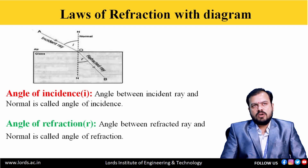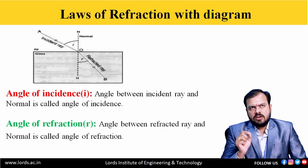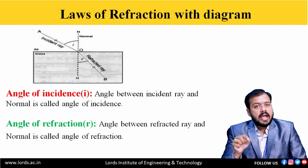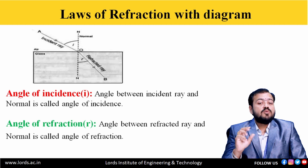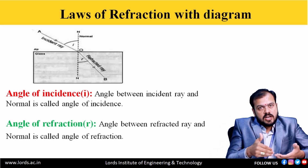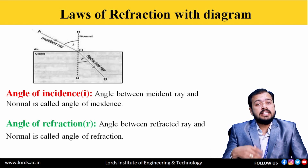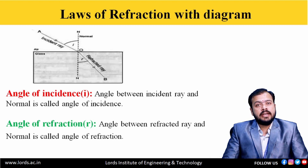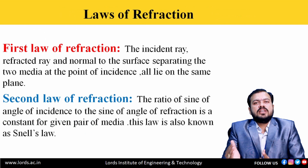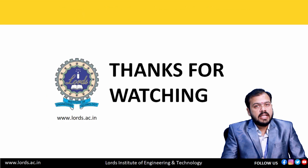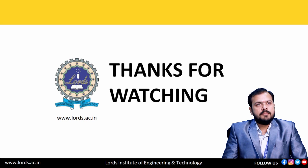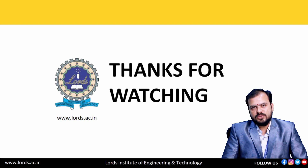One important point: when a ray of light is traveling from optically rarer medium to optically denser medium, the refracted ray moves towards the normal. When a ray of light is traveling from optically denser medium to optically rarer medium, the refracted ray moves away from the normal. That is very important. This is my complete presentation. Thank you very much.